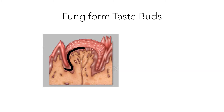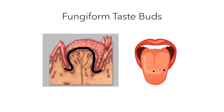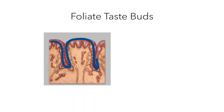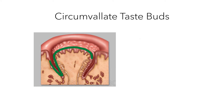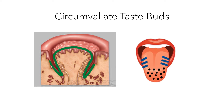The first type of taste bud is called a fungiform taste bud. This type is slightly mushroom-shaped, and they are found more in the front sections of the tongue. The second type of taste bud is called a foliate taste bud. This type has more ridges and grooves, and they are found more along the sides of the tongue. The third type of taste bud is called a circumvallate taste bud. This type is a lot more dome-shaped, and they are found along the back of the tongue, arranged in a semicircular row.